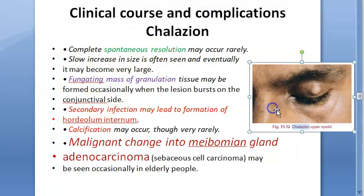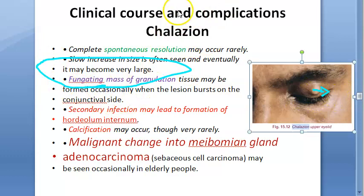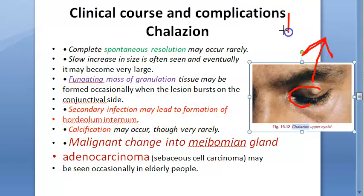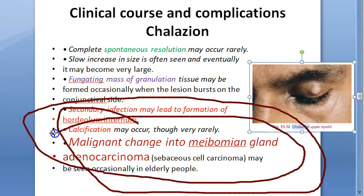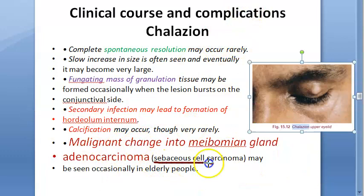Clinical course and complications: spontaneous resolution can occur. Otherwise it can keep growing and burst on the palpebral conjunctival side, forming a fungating mass of granulation tissue. If infected, it becomes an internal hordeolum. It can also undergo calcification and become hard. The worst complication is malignant change into meibomian gland adenocarcinoma — sebaceous cell carcinoma — especially in the elderly.